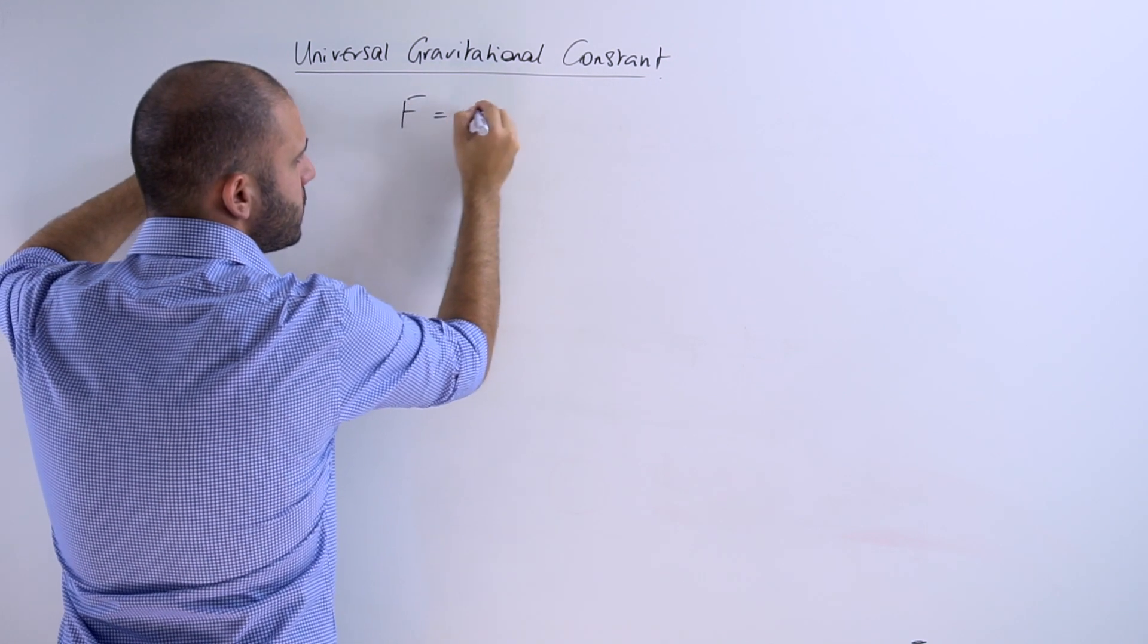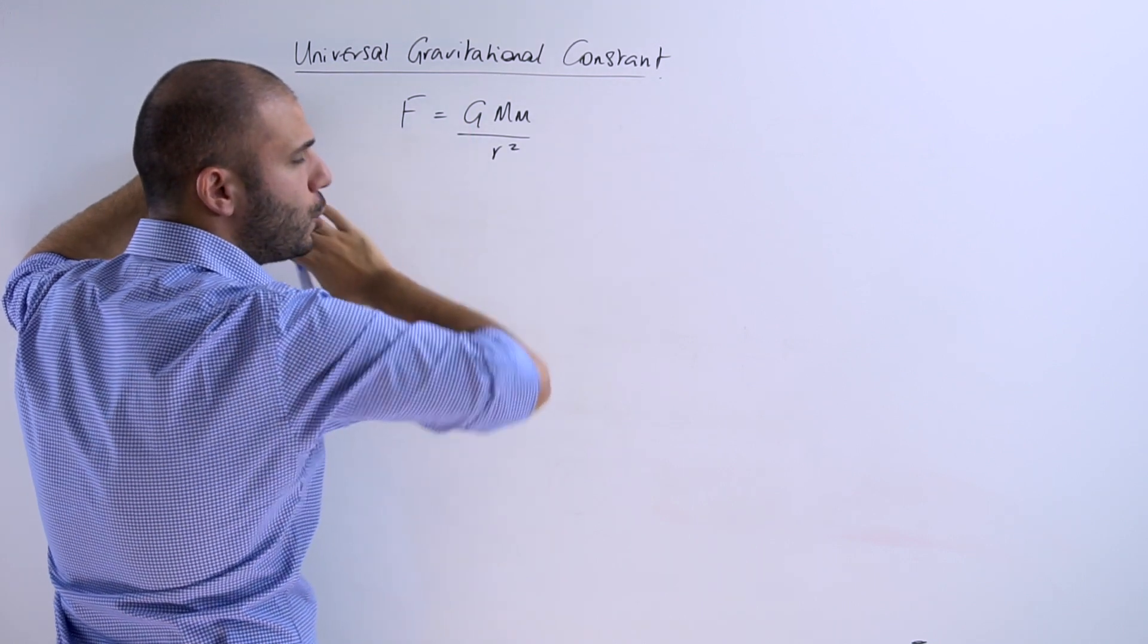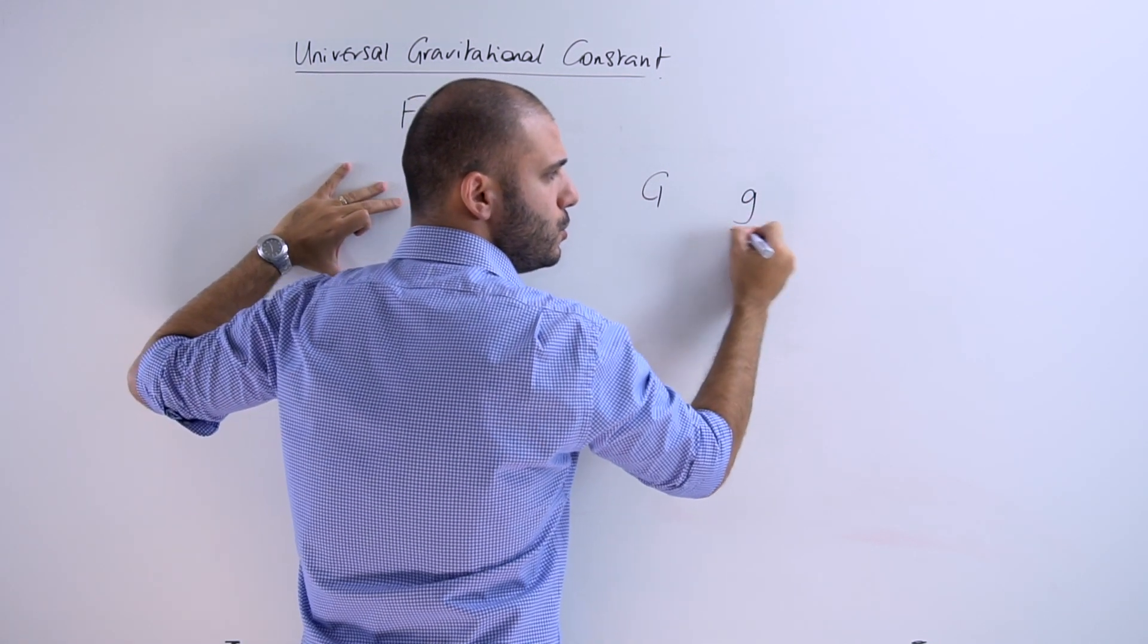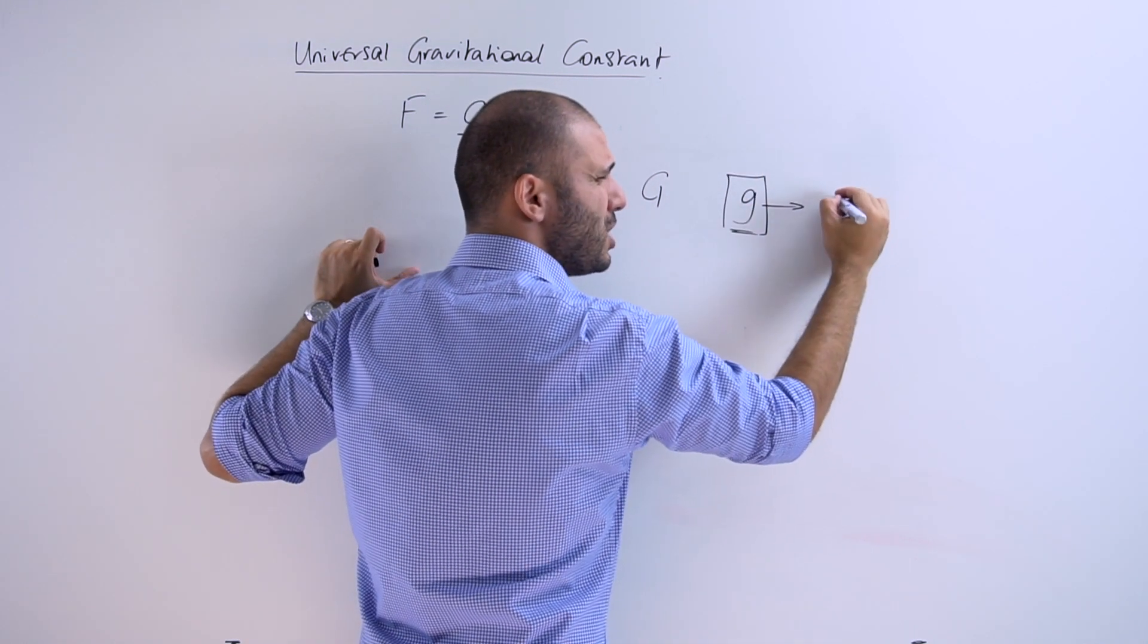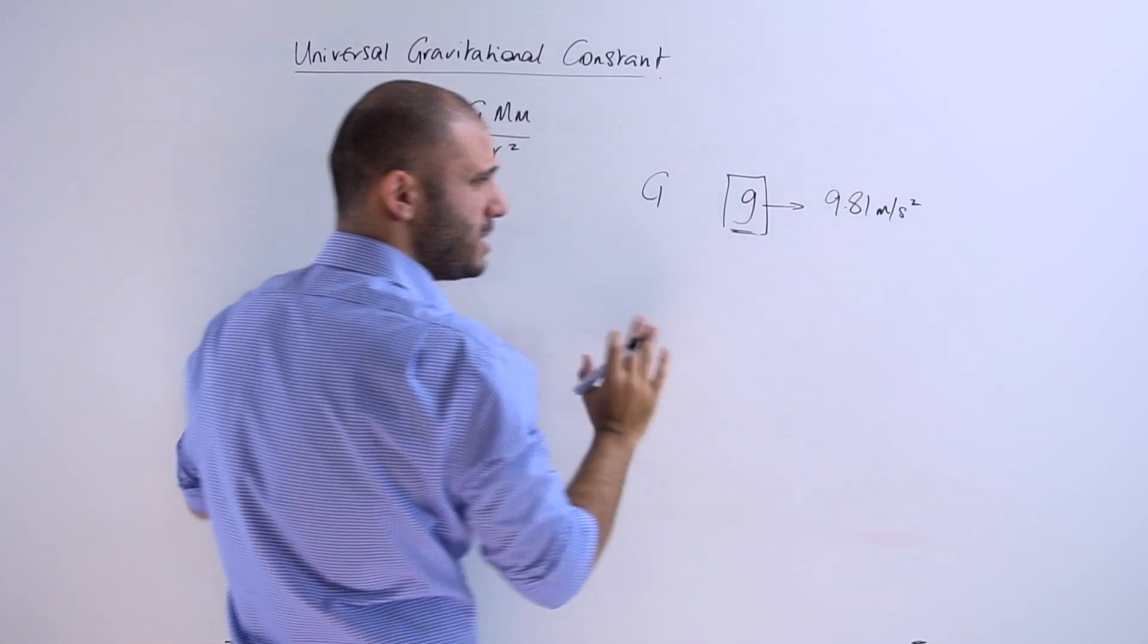What we're going to speak about now is this G in this equation. It's got nothing to do with the smaller g, which we really use to describe the gravitational acceleration, which at the surface of it we generally take as being 9.81 meters per second squared.